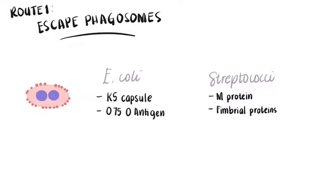For example, E. coli has the K5 capsule and the O75O antigen found on their surface that inhibits phagocytic cells from uptaking them. Some streptococcal bacteria produce proteins such as M-protein and fimbriae proteins to block engulfment.